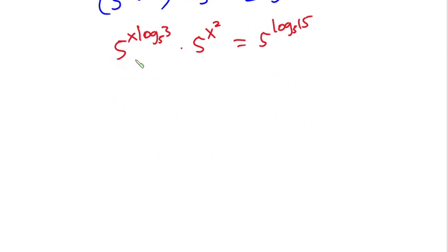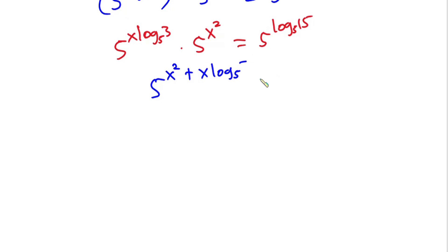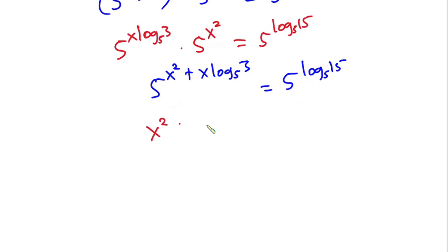This is very nice — we have the same base on both sides. On the right, I'll rewrite 15 as 5 to the power log base 5 of 15. Since we're multiplying terms with the same base, I can write one base and add the exponents: 5 to the power (x squared plus x·log₅(3)) equals 5 to the power log₅(15). Since the bases are the same, I equate the exponents: x squared plus x·log base 5 of 3 equals log base 5 of 15.